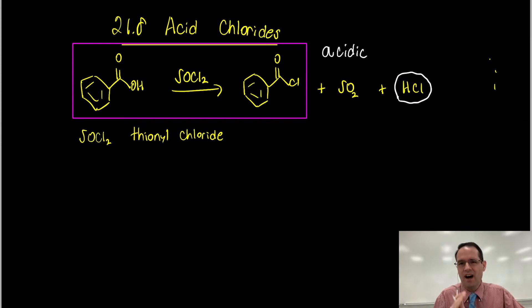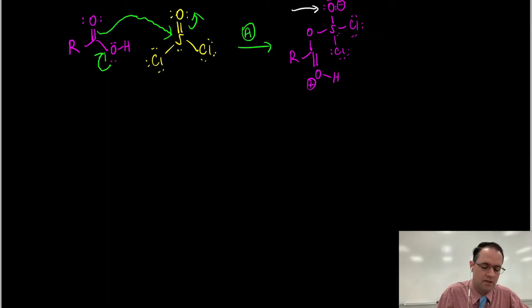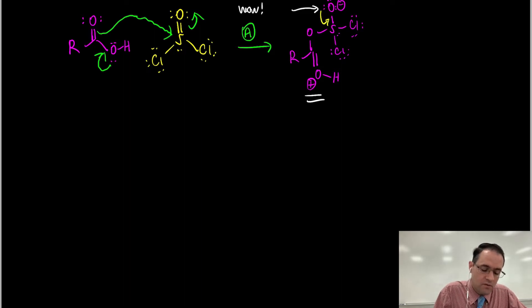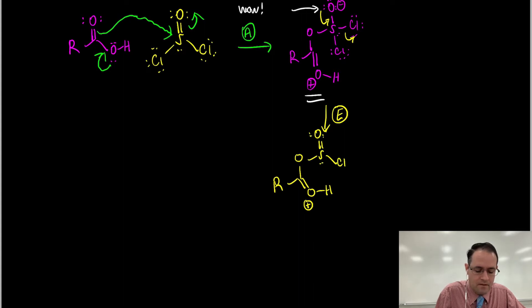Recall that we do not want to have any negatively charged oxygen atoms when we have acidic reaction conditions - all oxygen atoms should generally be neutral or protonated. You can see we're breaking this rule in the very first step of the reaction mechanism, where we have an O-negative. Now at this stage we are going to kick off our leaving group - kick off the chloride. That's why I like doing SN2 for the very first reaction on the sulfur.